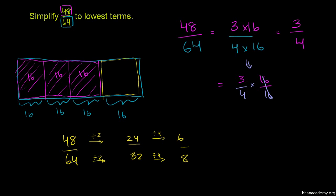So 48 over 64 is the same thing as 24 over 32, which is the same thing as 6 eighths. And these are both divisible by 2. So if you divide the numerator by 2, you get 3. You divide the denominator by 2, you get 4. And so this is the simplest possible terms, because 3 and 4 share no common factors greater than 1. So we're in lowest possible terms.